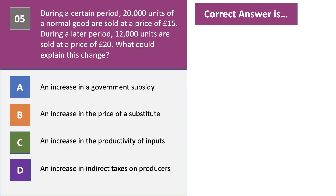Here's question 5. During a certain period 20,000 units of a normal good are sold at a price of £15. During a later period 12,000 units are sold at a price of £20. What could explain this change? Please press the pause button and have a go at question 5.